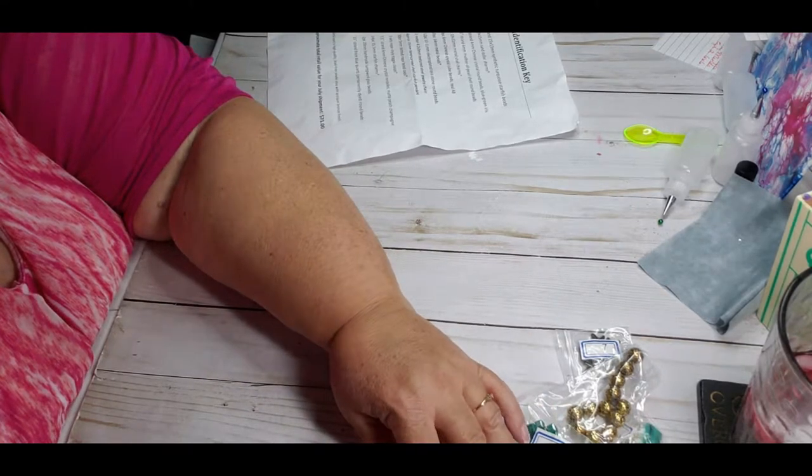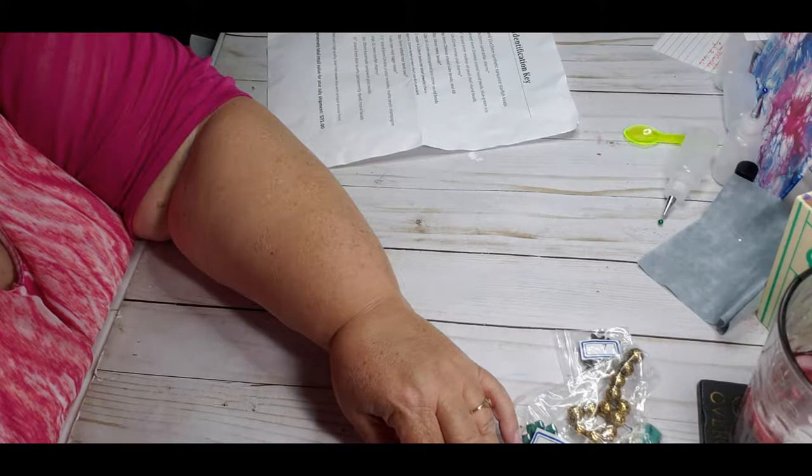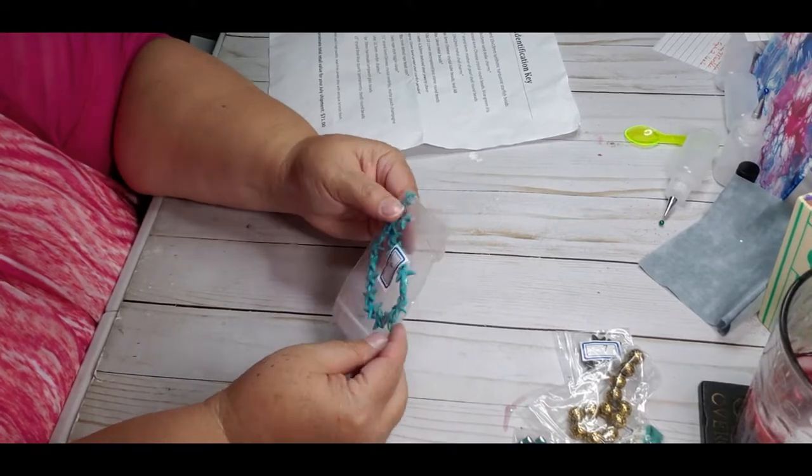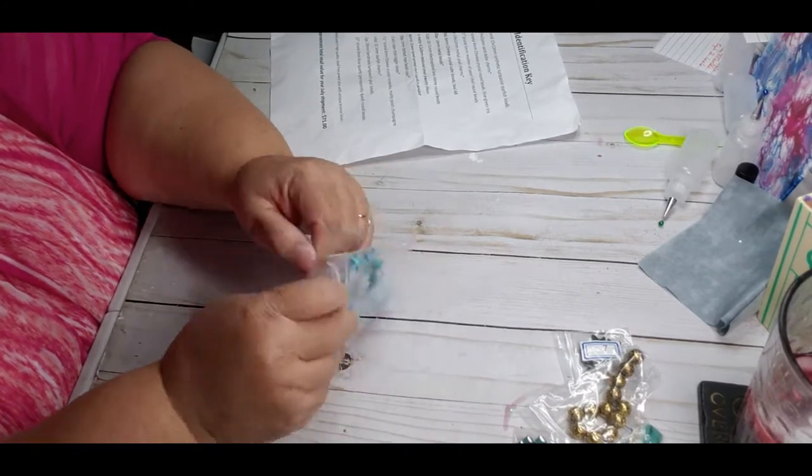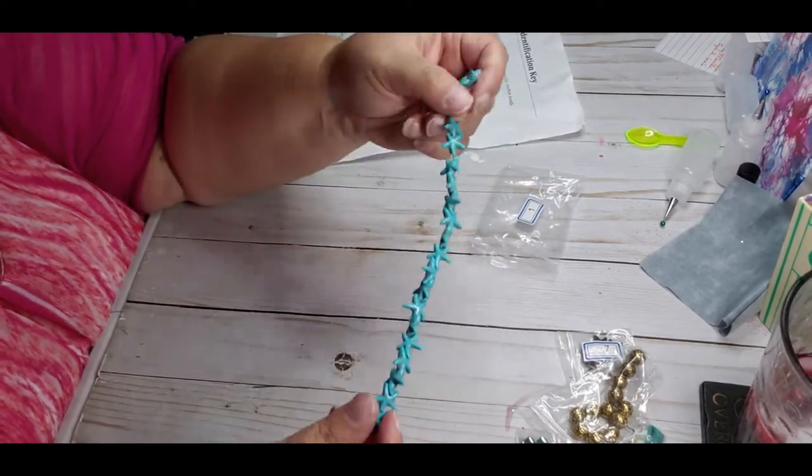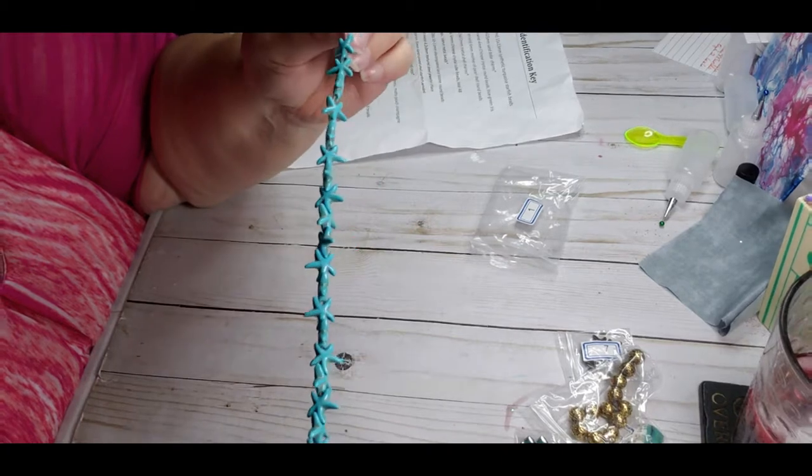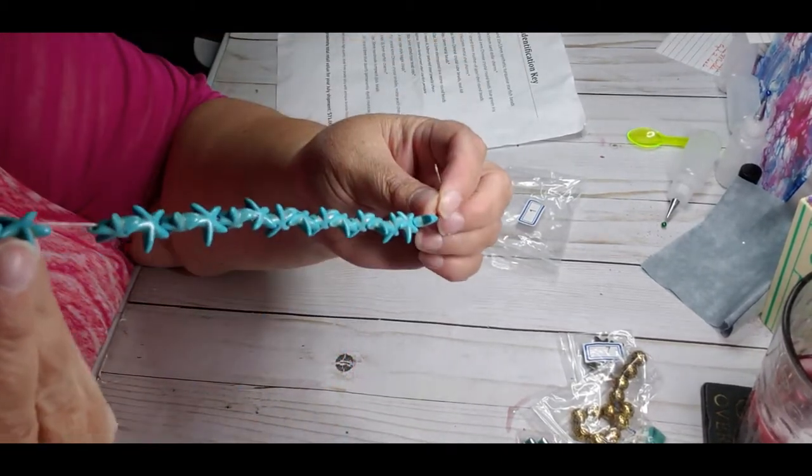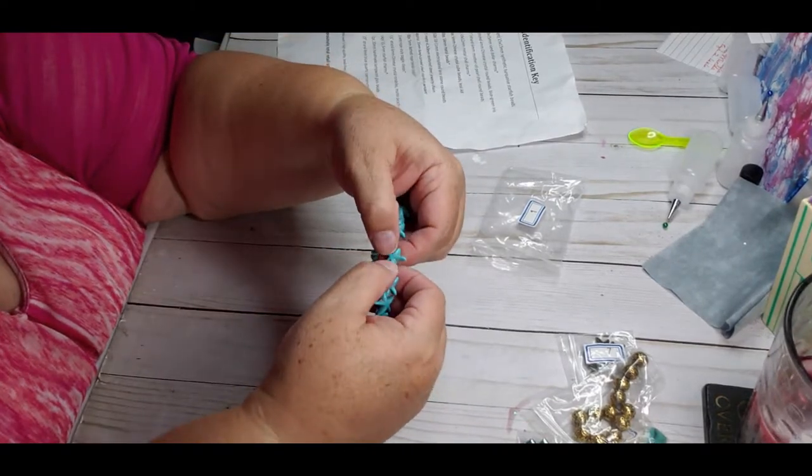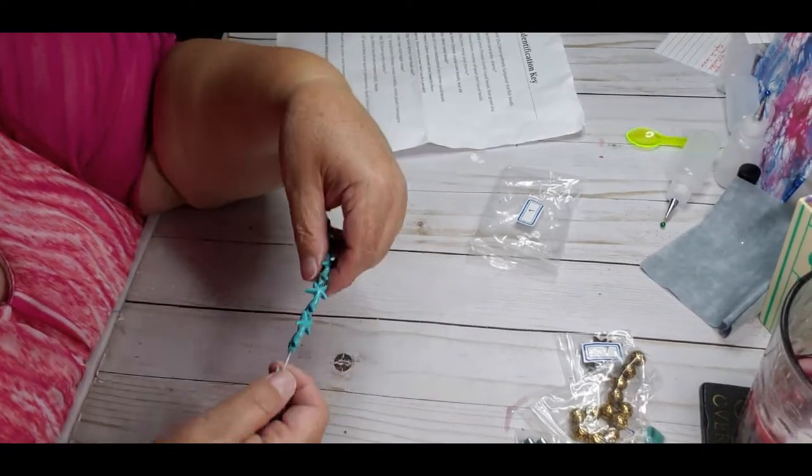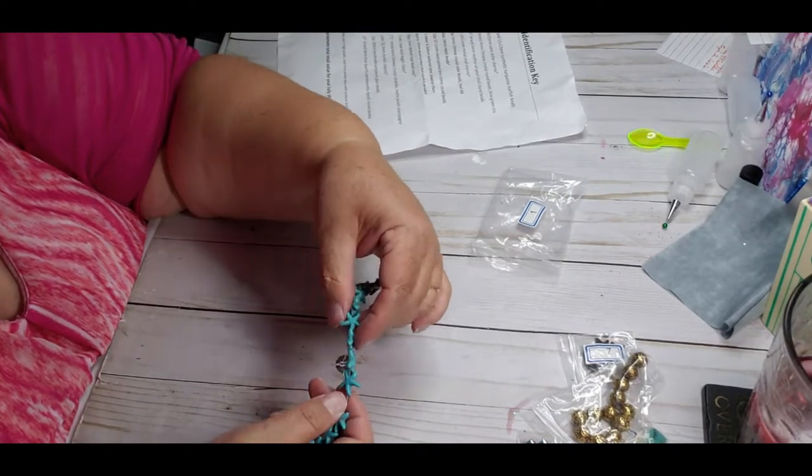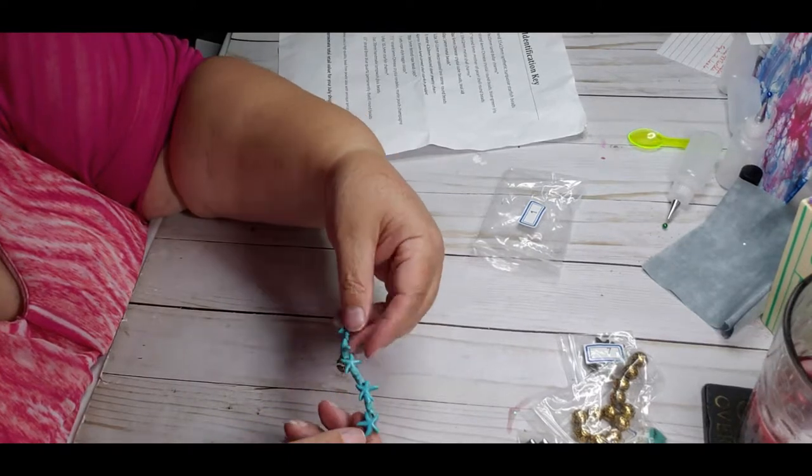Number one says eight inch strand, 15 by 13 millimeter synthetic turquoise starfish beads. Synthetic beads, starfish - that's cute. They're turquoise looking. Looks like they put something on them to look more aged instead of like plastic. Cool.